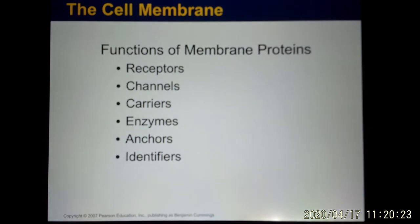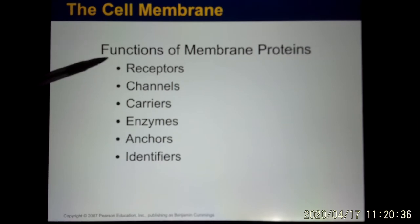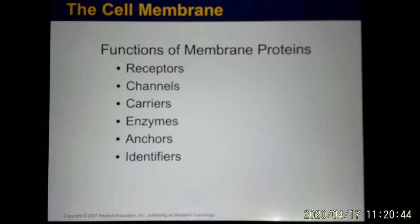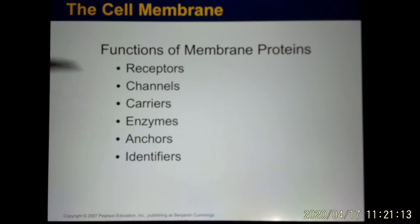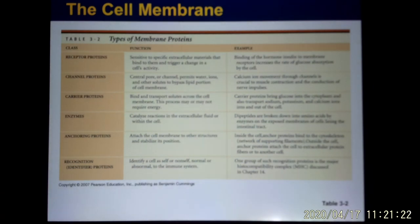The proteins on the cell membrane have different functions. Some are receptors — when the nervous system and endocrine system release neurotransmitters and hormones, they bind with the receptors. Some membrane proteins are channels and carriers; their job is to move molecules in and out of the cell, because many molecules cannot simply diffuse through the cell membrane on their own. Some membrane proteins are enzymes that help trigger chemical interactions in the body. And anchor proteins help your immune system identify your cells.